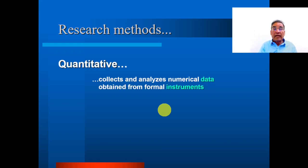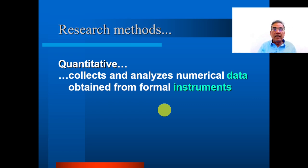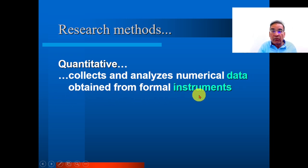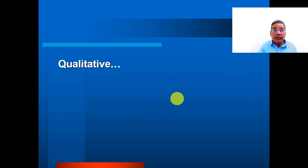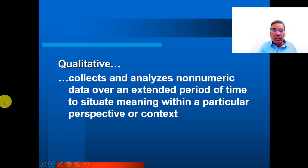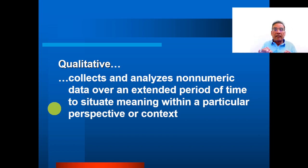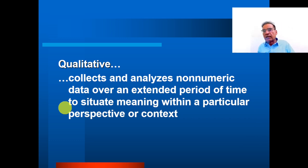Research methods. There are two main types: quantitative and qualitative. Quantitative means collecting and analyzing numerical data obtained from formal instruments — we make a formal instrument for collecting and analyzing data. Qualitative means collecting and analyzing non-numerical data over an extended period of time to situate meaning within a particular perspective or context. In simple words, qualitative deals with words and qualitative deals with non-numerical data, while quantitative deals with numerical data.